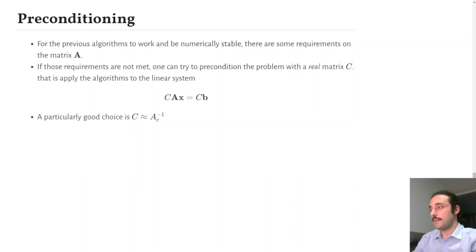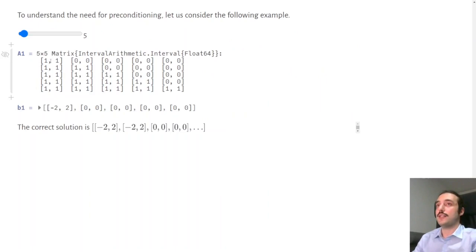Let's have an example to motivate the importance of preconditioning. Let's consider this interval linear problem where A is a lower triangular matrix with all ones in the lower part, and B is a vector with the interval minus 2, 2 as first element and all zeros afterwards. And here, we can see what is the theoretically correct answer if we solve the problem with pen and paper.